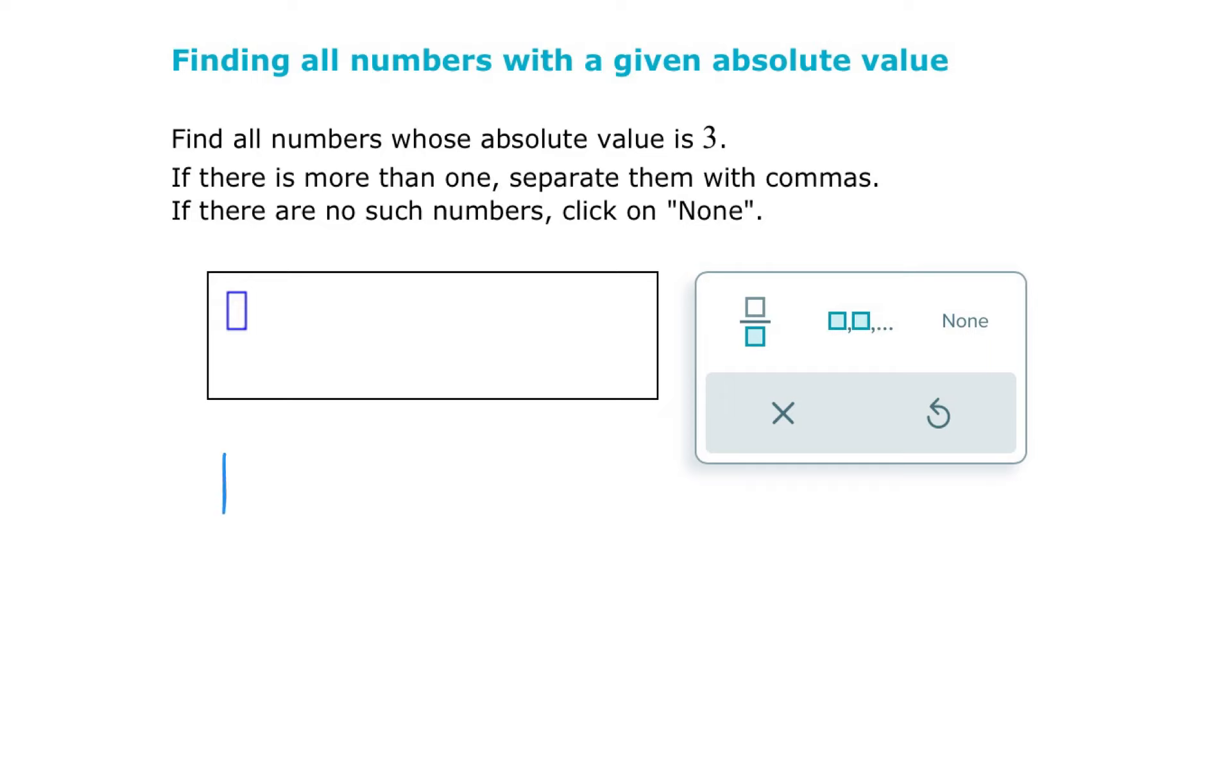For this one, we want all the values of x whose absolute value is 3. So x could be positive 3, but it also could be negative 3. Both of them are 3 units from 0.